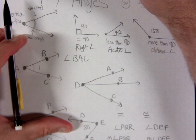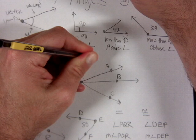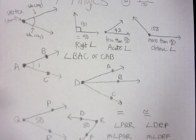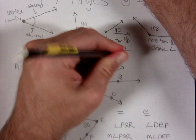You can also start from the other side, so another correct way to name this angle is angle CAB. Both BAC and CAB are correct names for the same angle.